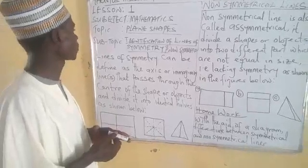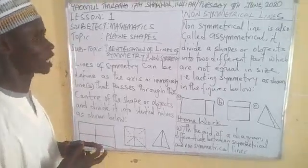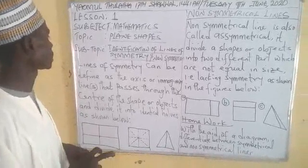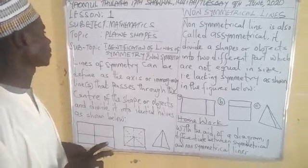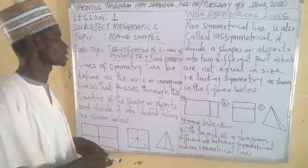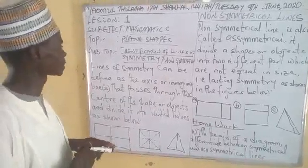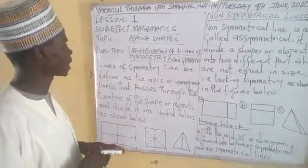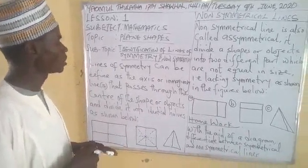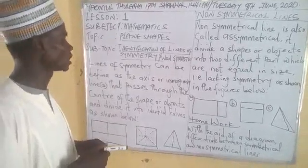In our last class, we learned the concept of two-dimensional shapes. By definition, two-dimensional shapes are those plane shapes that can be measured in two dimensions, such as a square, a rectangle, a circle, and many others.